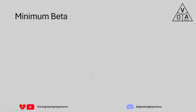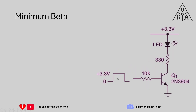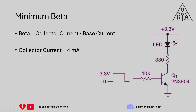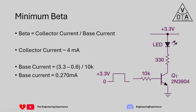For the second part, we need to calculate the minimum beta, which is the current gain of a transistor - sometimes denoted as HFE. HFE equals the collector current divided by the base current. The emitter current is the total of collector plus base current, but that's not required here. We previously calculated the collector current as approximately 4 milliamps.